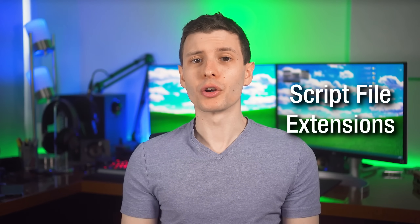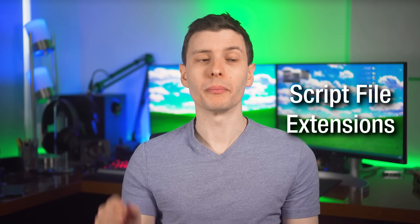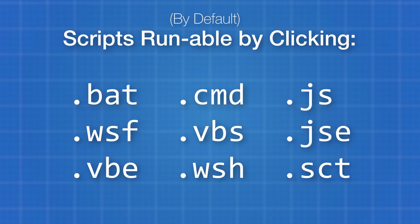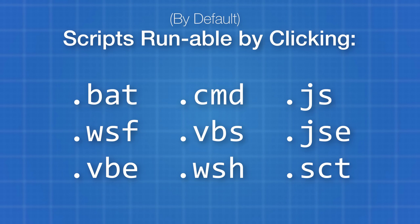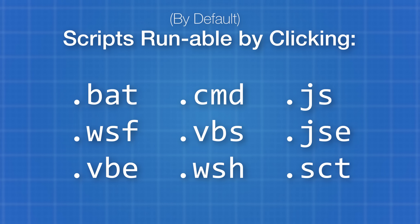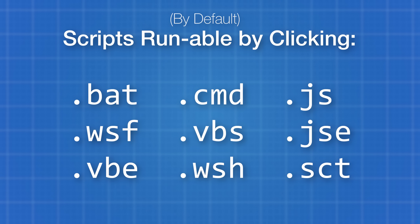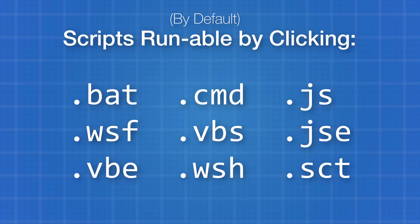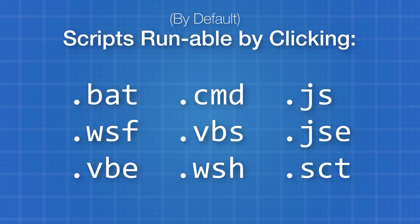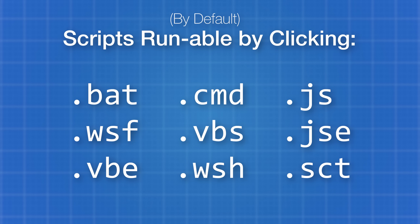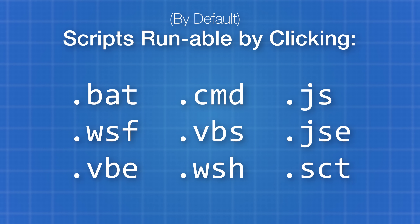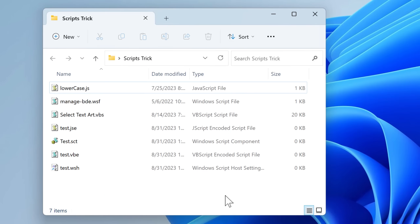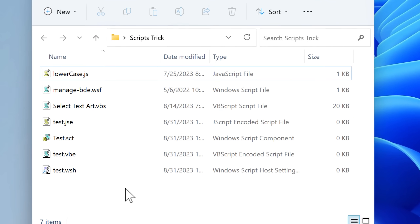Moving on to script files, there are quite a few that can be run in Windows by default by just double-clicking them. You have .bat and .cmd files, which basically run command prompt commands. There are also types related to JavaScript and Visual Basic: .js is an actual JavaScript file, and .wsf, .vbs, .jse, .vbe, .wsh, and .sct can also be run just by clicking on them. Here's a tip to prevent yourself from accidentally clicking and running these files — unfortunately it doesn't work for .bat and .cmd, but it should work with the rest.